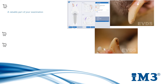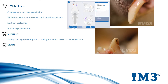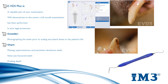Charting is a valuable part of your examination and demonstrates to the owner that a full mouth examination has been performed. Most importantly, it is also your legal document. Consider taking a picture of the patient's mouth prior to any scaling and attach these to the patient's file. Continue to chart and note any supranumerary and persistent deciduous teeth. To know what is supranumerary, you must remember how many teeth there should be — go back to your Triadan system as a guide.